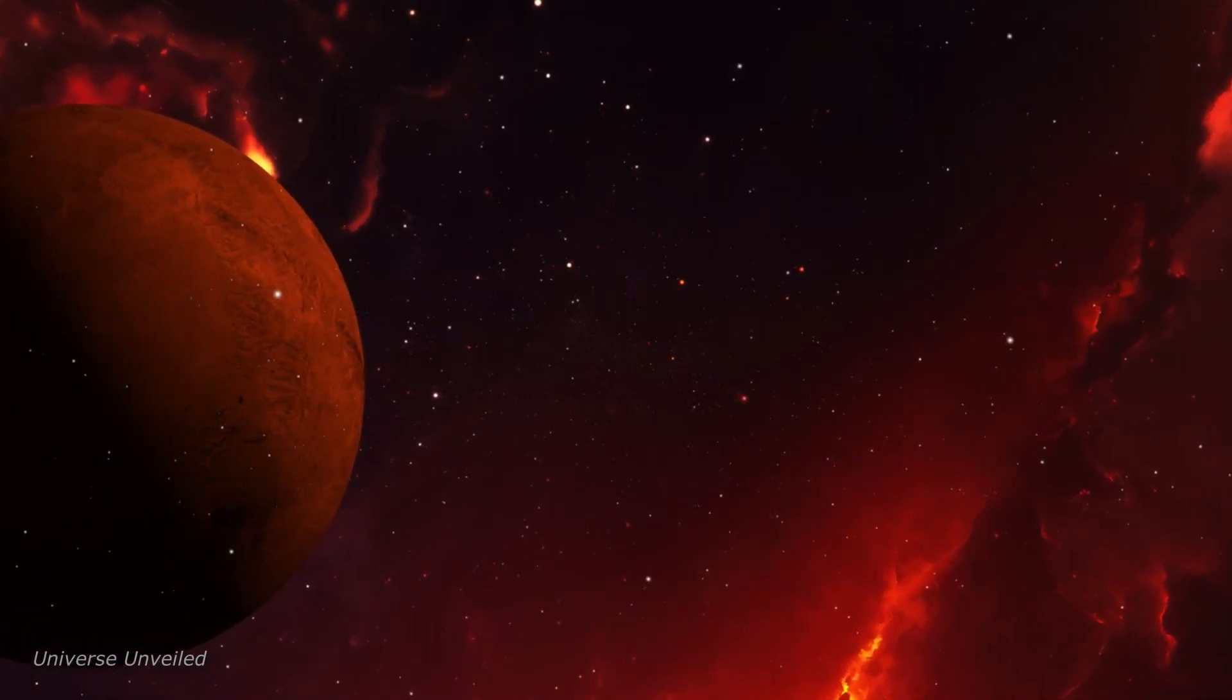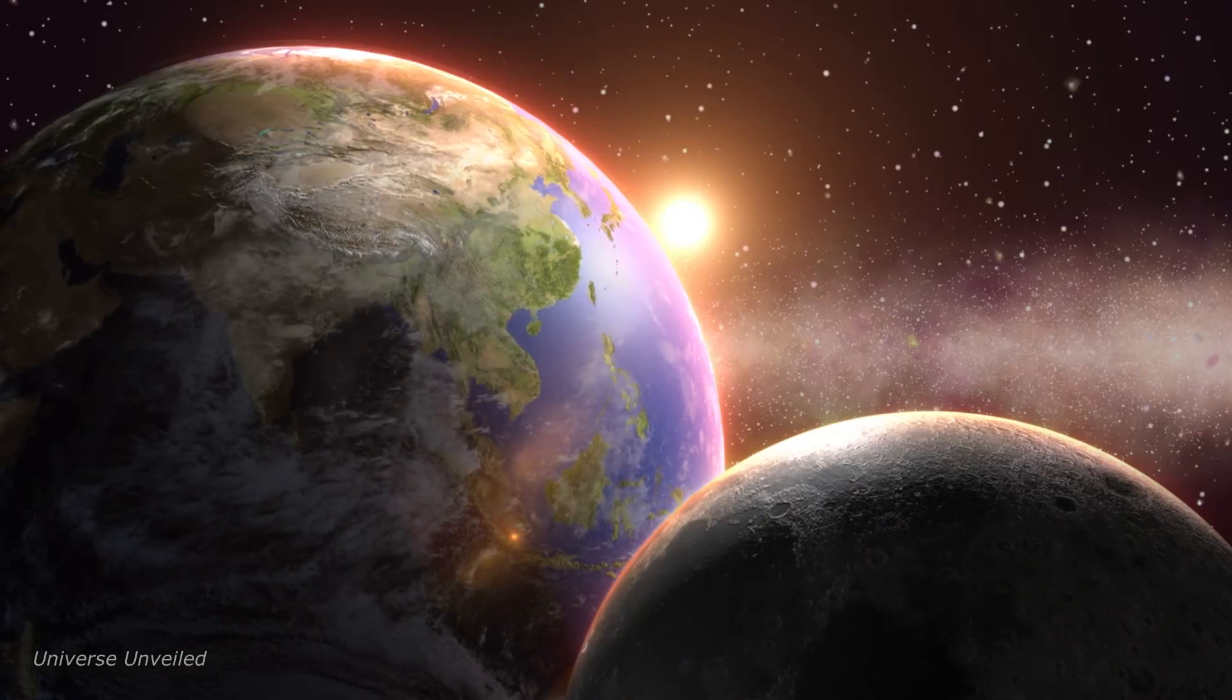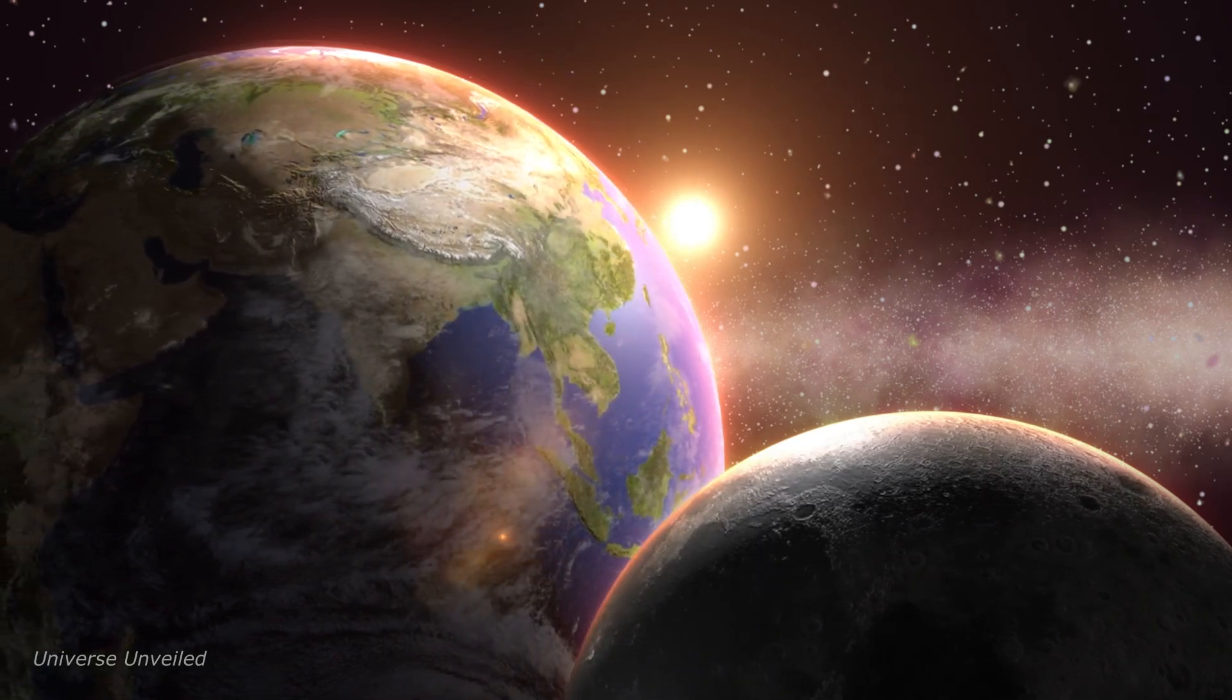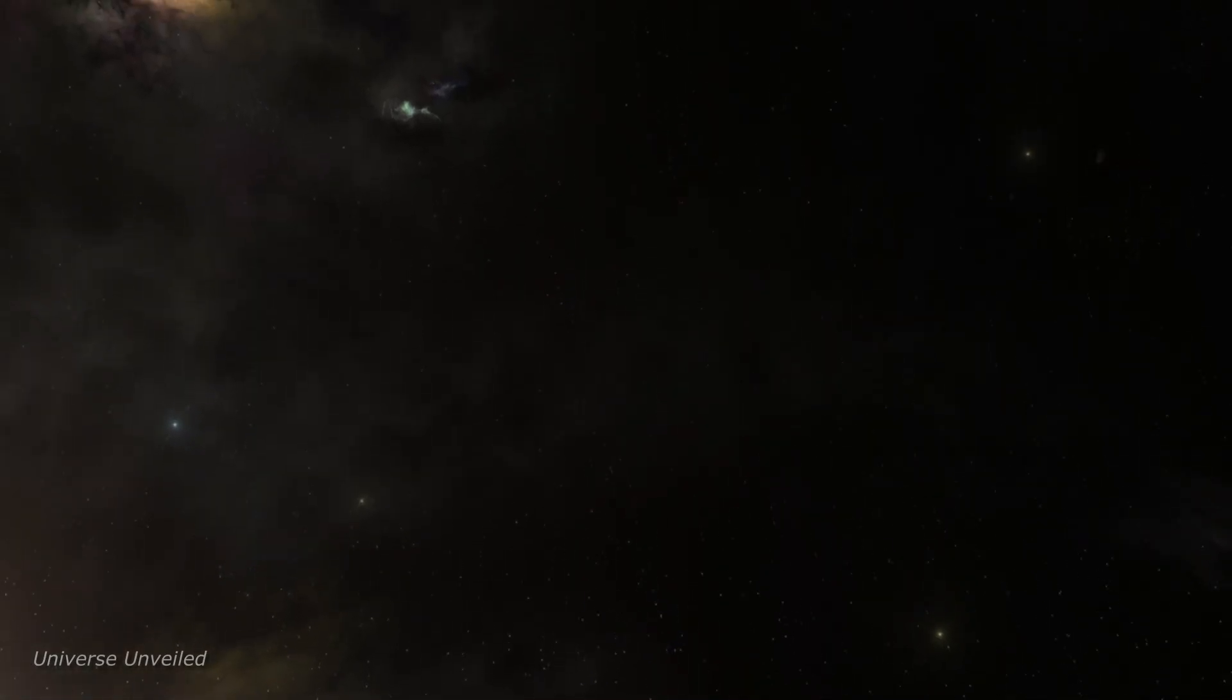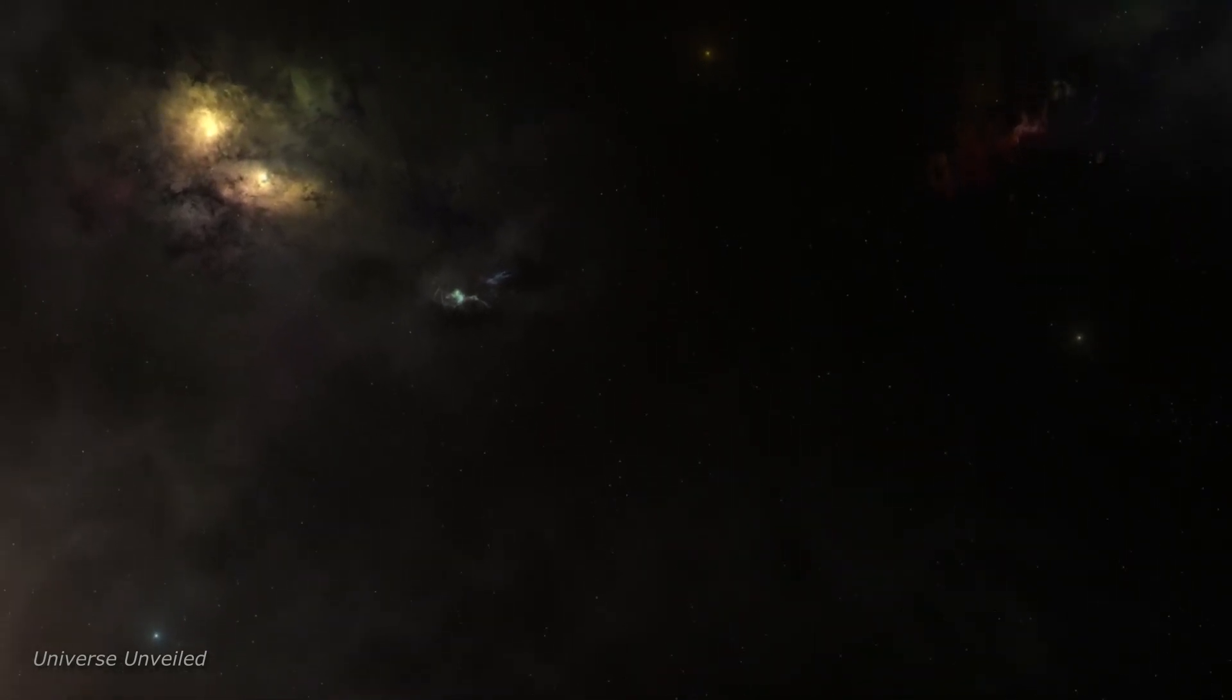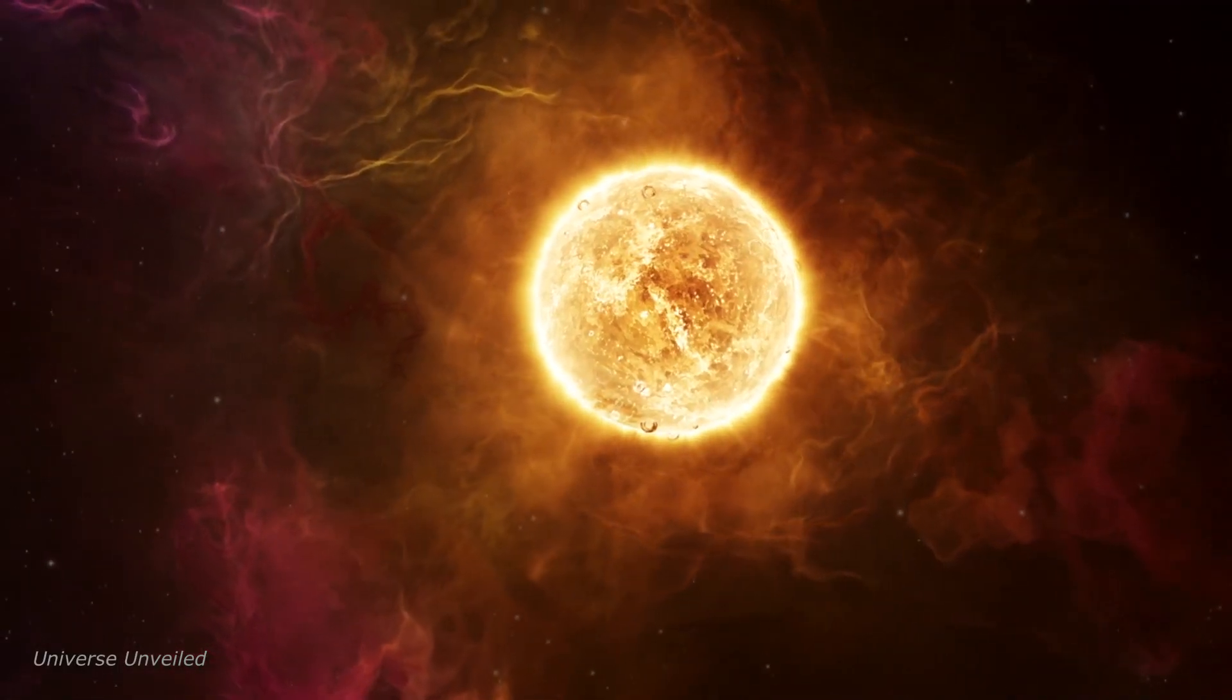Oumuamua's visit has been a game-changer in the way we understand planet formation. It's the first object we've observed from outside our own solar system, and it tells a story of cosmic processes that differ from what we've seen in our own backyard. This interstellar object is like a time capsule, carrying with it the secrets of its home system and possibly providing clues about how planets form elsewhere in the cosmos.